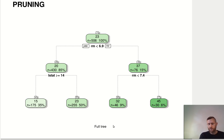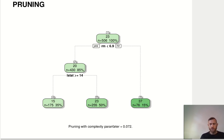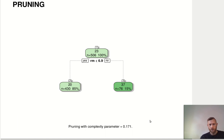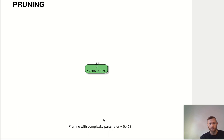If we use a complexity parameter of 0.072, the best subtree for that limited complexity is the one where we just don't do any splits on the right node. If we reduce it even further, we also cut the left branch and end up with a tree that's basically just one split. And if we reduce the complexity parameter even further, we don't do any splits anymore — we've pruned it all back and it's just a stem.